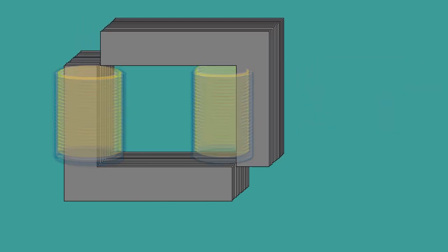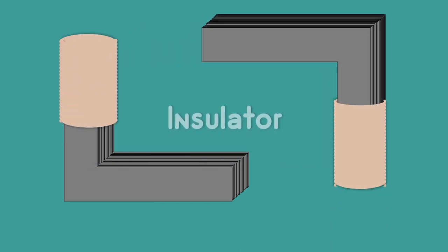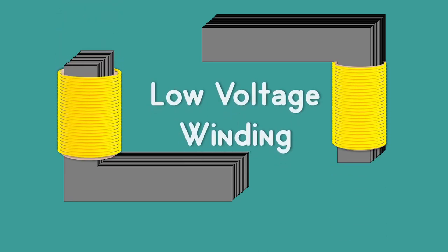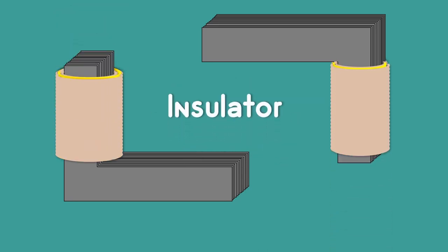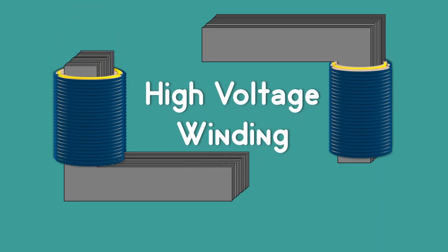But actually, these two limbs will carry equal parts of primary and secondary windings in order to reduce the leakage flux. These coils are insulated from one another.